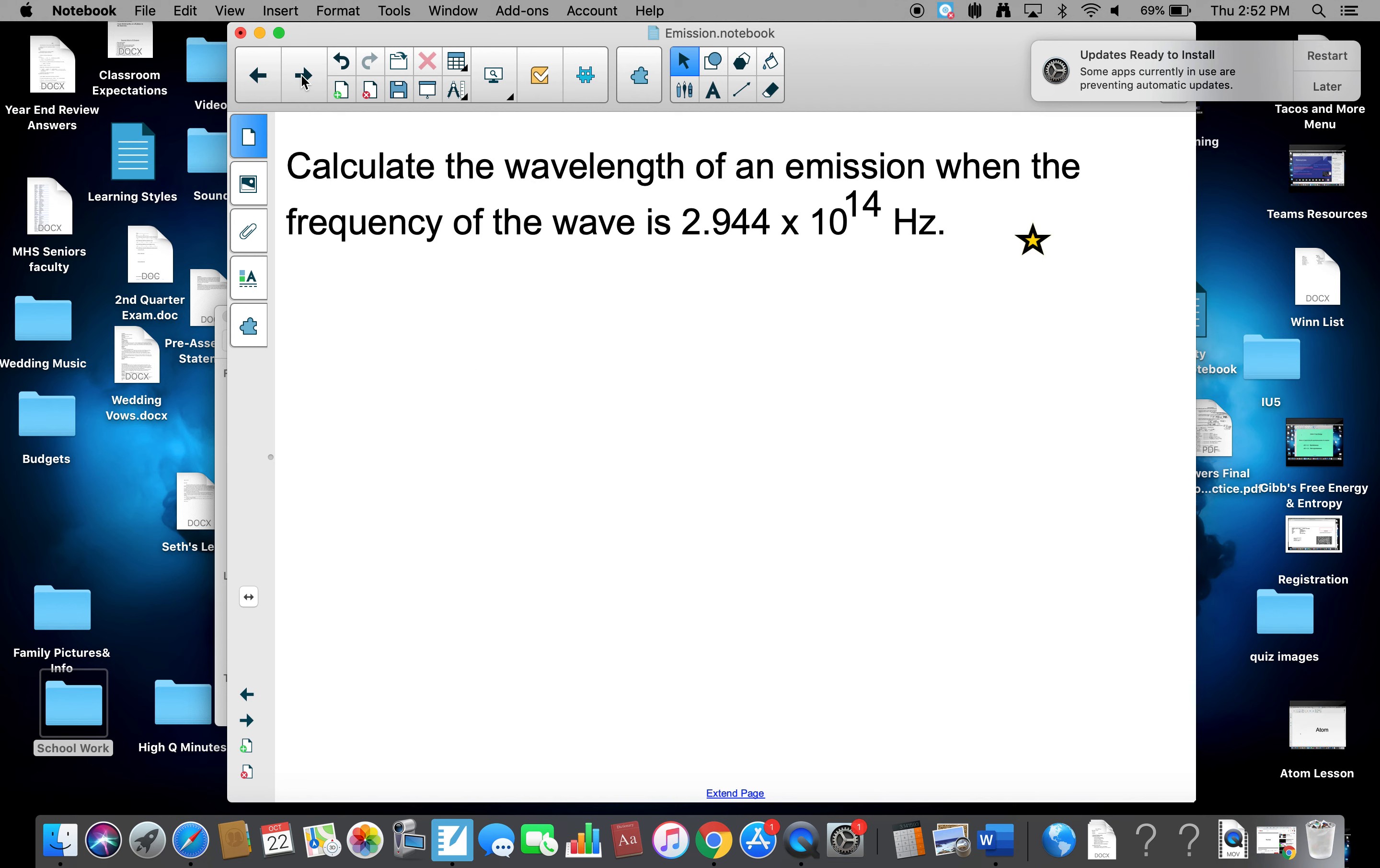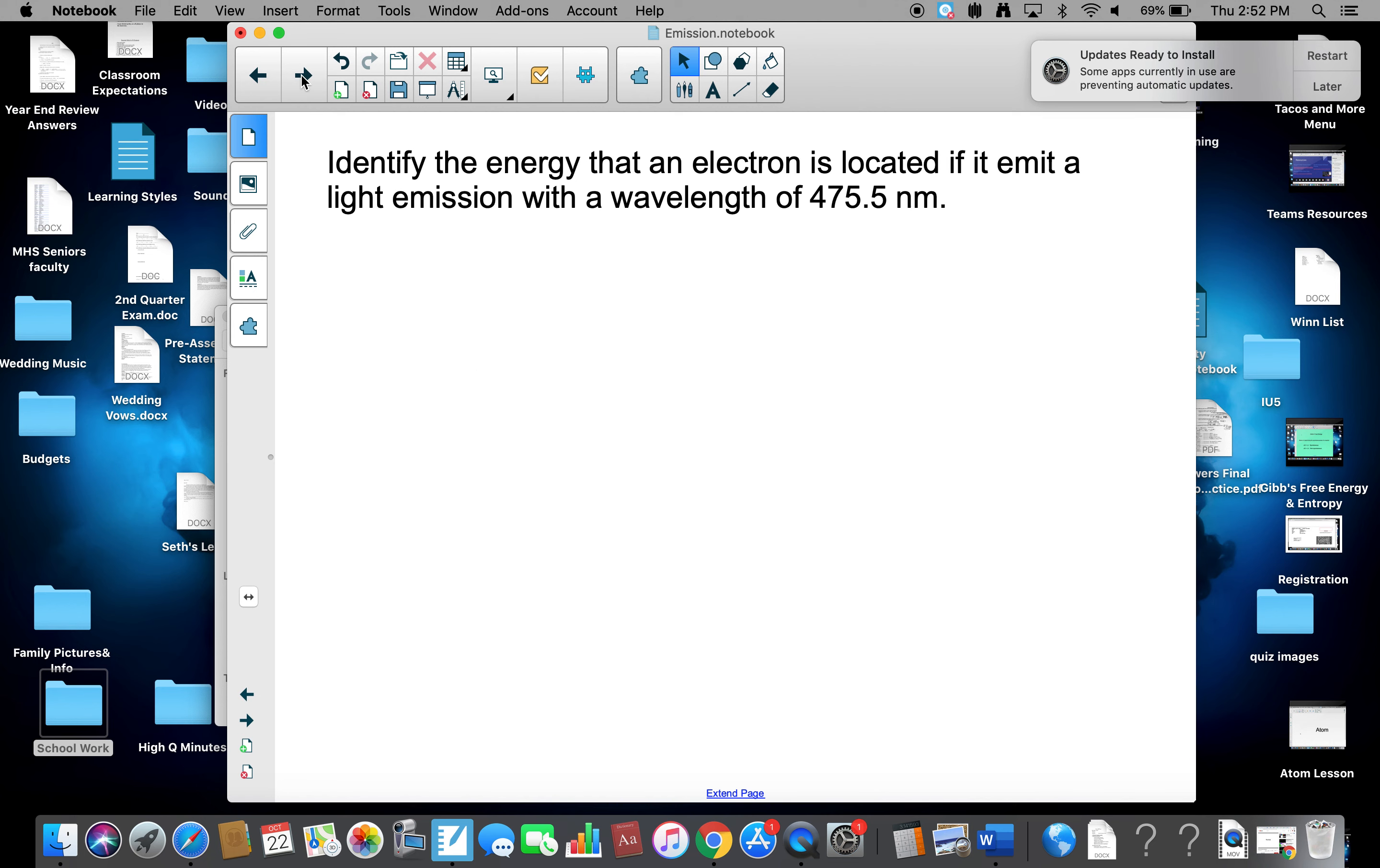Here's the second problem we'll do in class. Copy it down. So let's look at this one. Identify the energy of an electron is located if it emits a light emission at a wavelength of 475.5 nanometers.